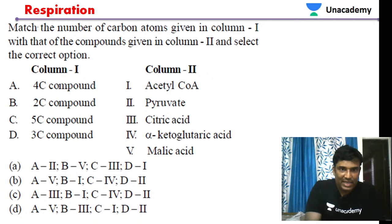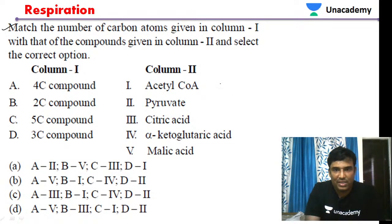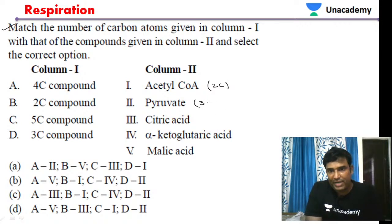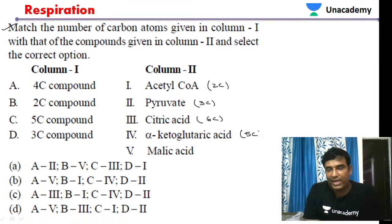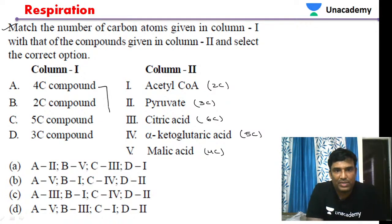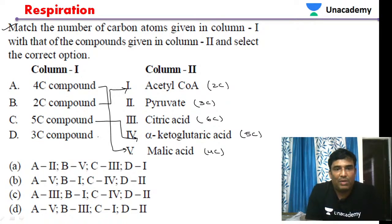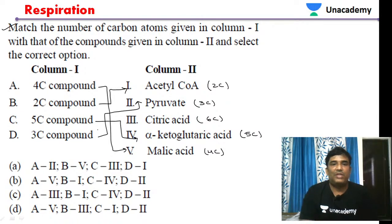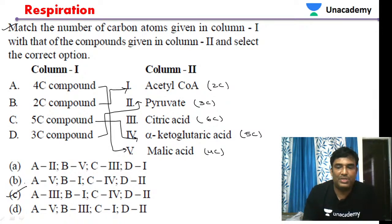MCQ: Match the number of carbon atoms with the corresponding compounds. Acetyl-CoA is a 2-carbon compound, pyruvate is a 3-carbon compound, citric acid is a 6-carbon compound, alpha-ketoglutaric acid is a 5-carbon compound, and malic acid is a 4-carbon compound. Based on the matching, the correct answer is option C.